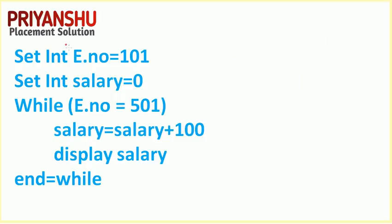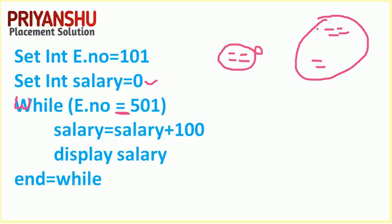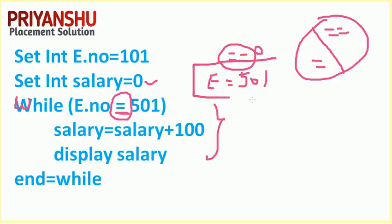For this next question: int e_no = 101 — that's employee number — and sale = 0. Then while(e_no = 501) — notice this is a single equals sign, not double equals. Many students make this mistake: single equals is the assignment operator, not a comparison. So every iteration, e_no is assigned 501. This condition is always treated as true. Therefore, this loop also goes to an infinite loop.